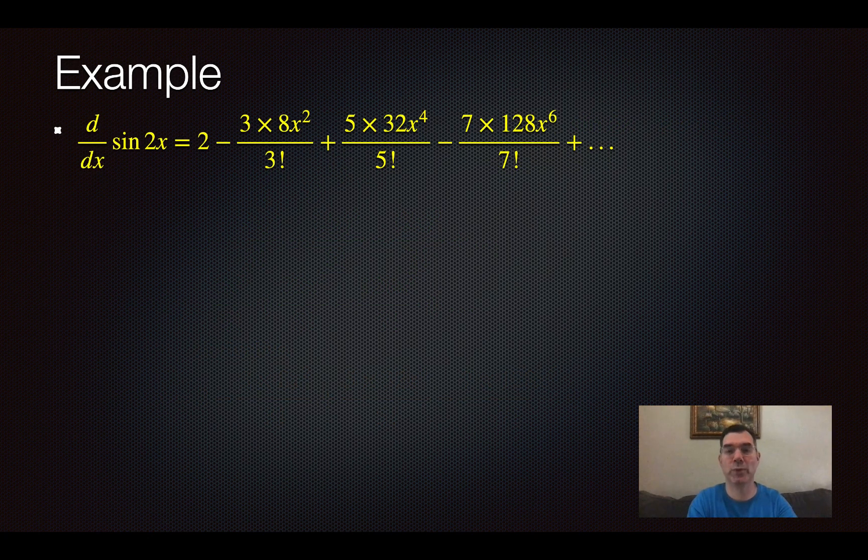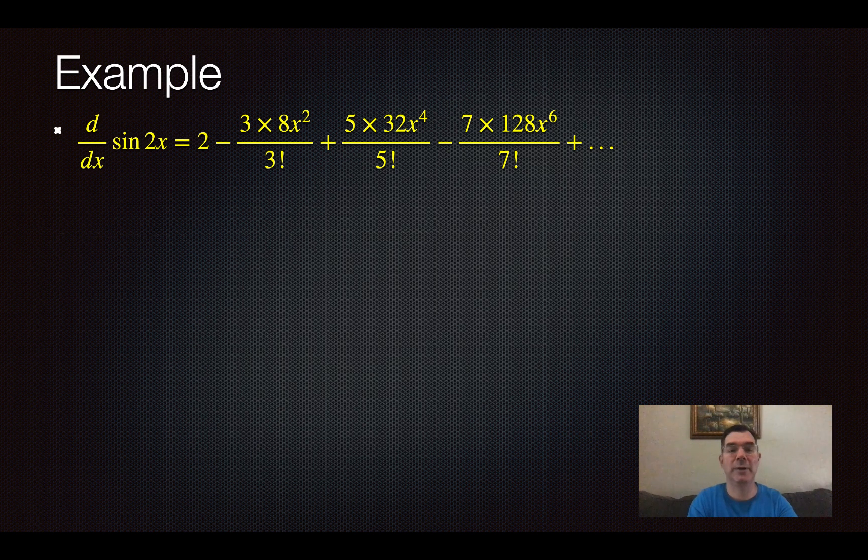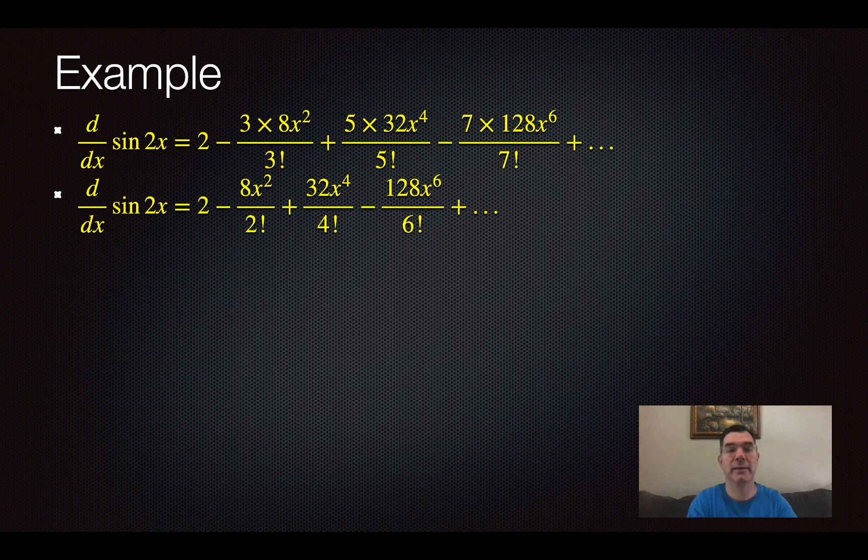And I'm just rewriting it here because I ran out of room on the previous slide. So I'm going to keep going and just simplify a little bit. The 3s will cancel in the second term there. And the 5s will cancel in the third term. The 7s will cancel in the fourth term. And that pattern would continue if I had more terms. So you see what I have there is 2 minus 8x² over 2 factorial and so on.